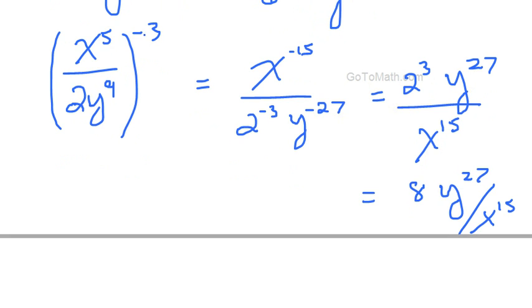Now, back to here, there's a quick way of looking at this. We have a negative here, you could just flip everything. 2y to the 9th, x to the 5th, and then this becomes positive 3. See that? So, and then we could just go from there, instead of having to go through this whole route here.